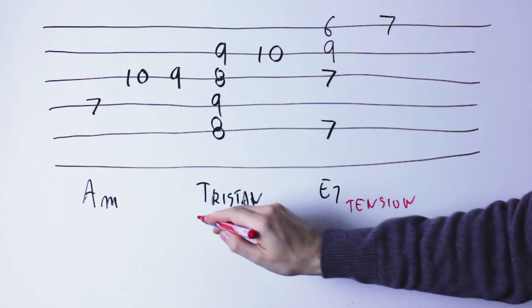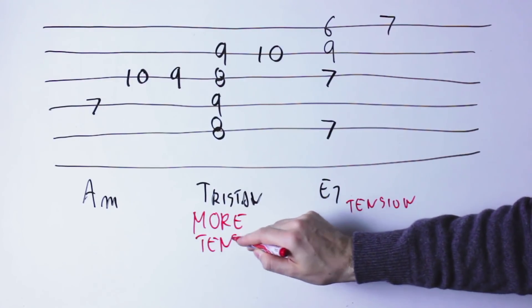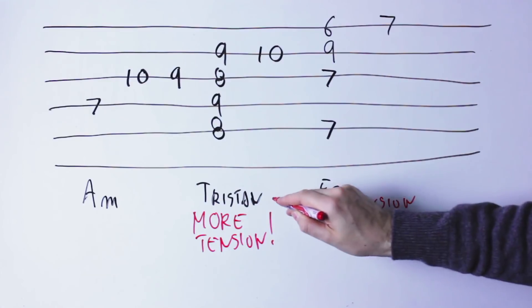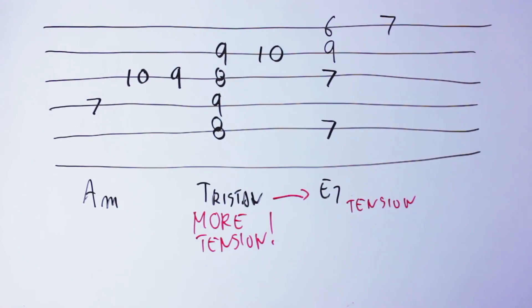...the Tristan chord is so tense, it has such a sense of unrest that when you play the fifth chord, it feels like the tension has been resolved, even if you still are on a tension chord.